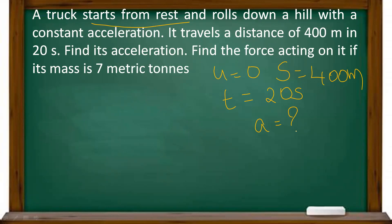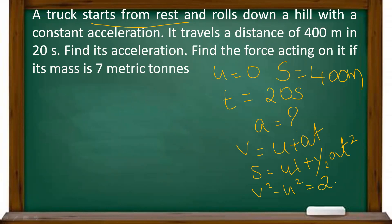We have three equations of motion: v equals u plus at, s equals ut plus half at squared, and v squared minus u squared equals 2as. Since we are not asked for final velocity v, we will select the most suitable formula. The second equation s equals ut plus half at squared is most appropriate here.